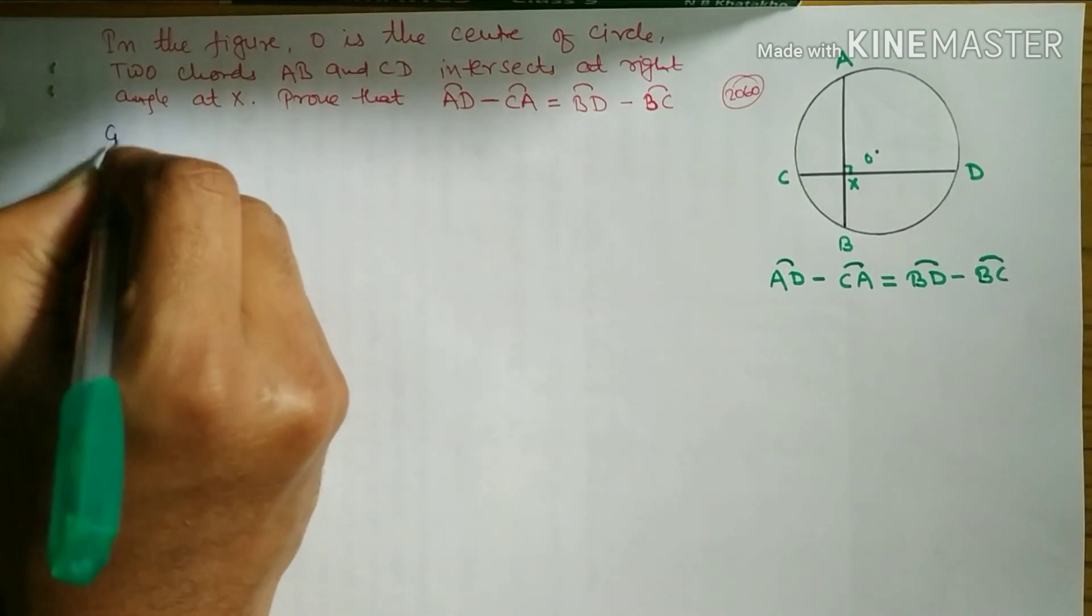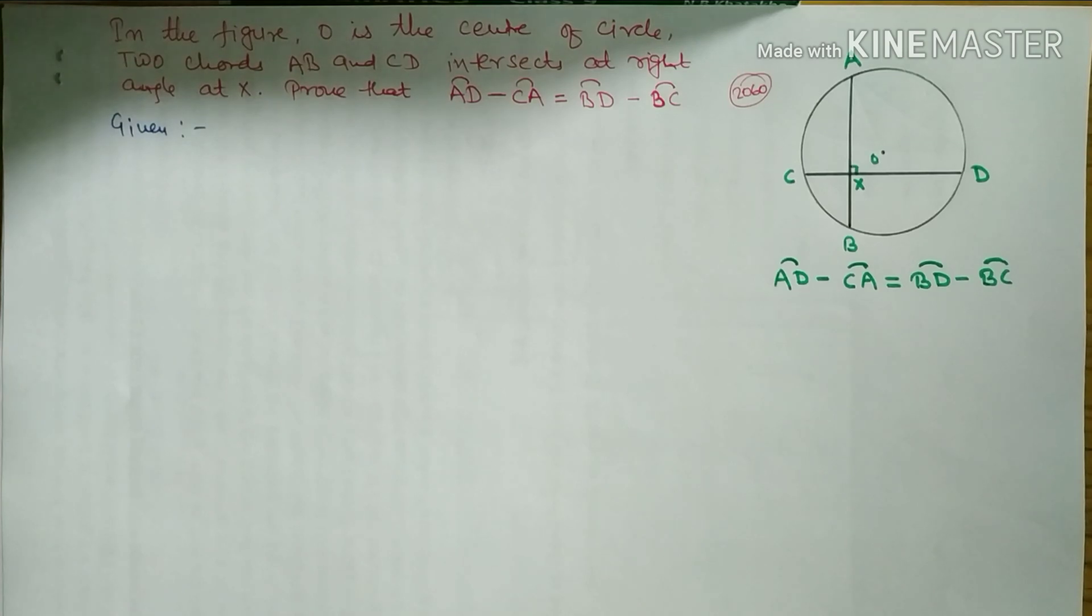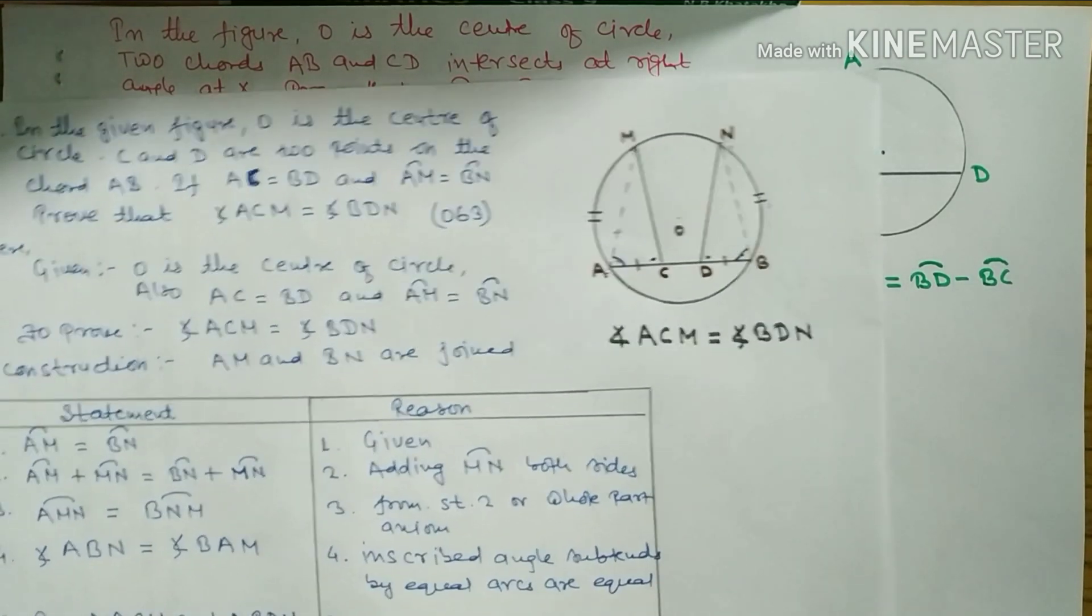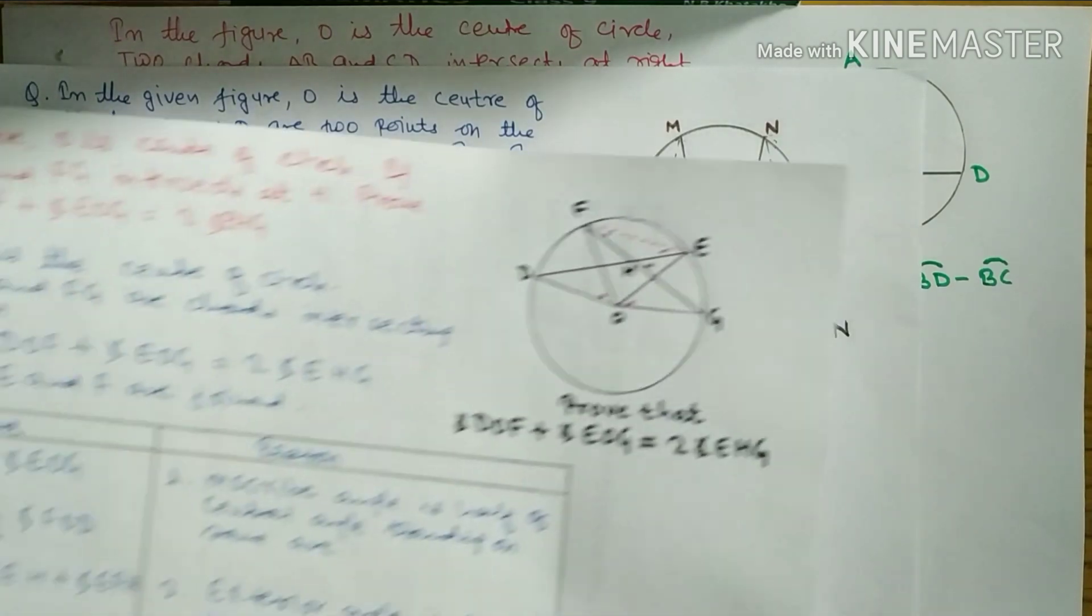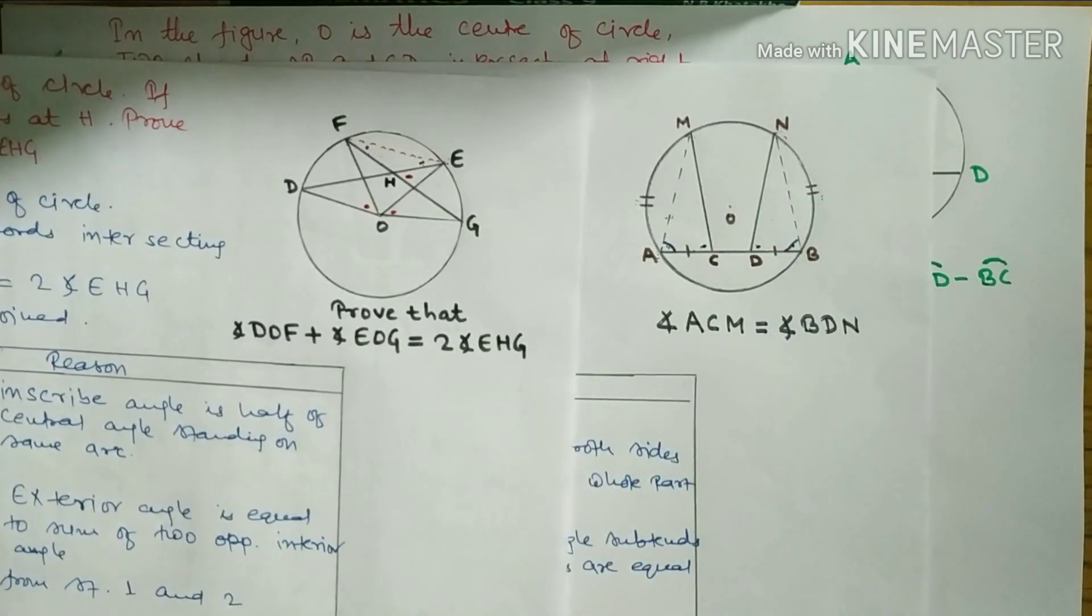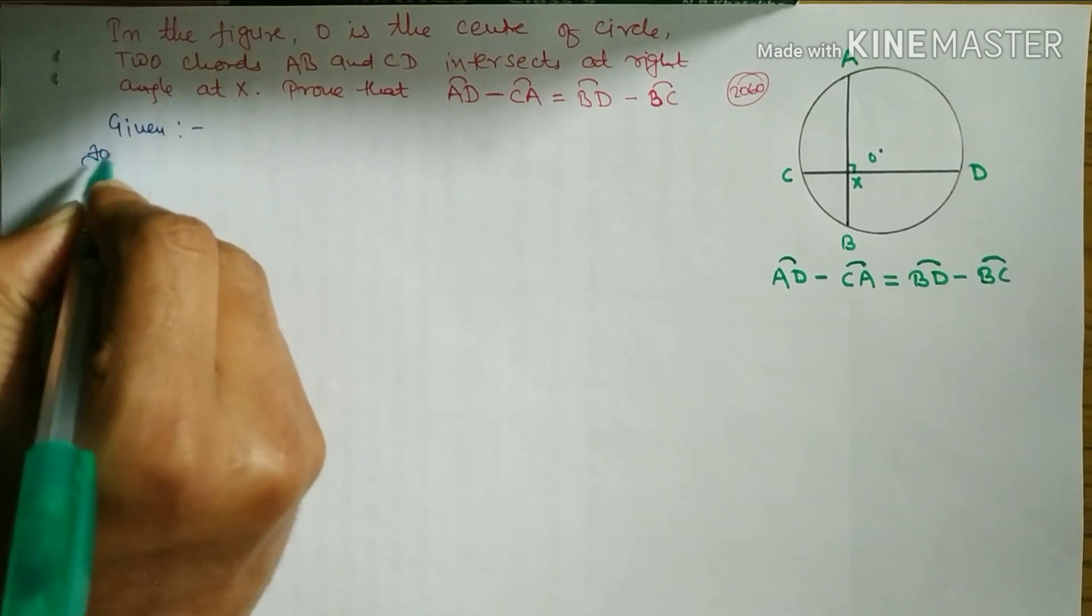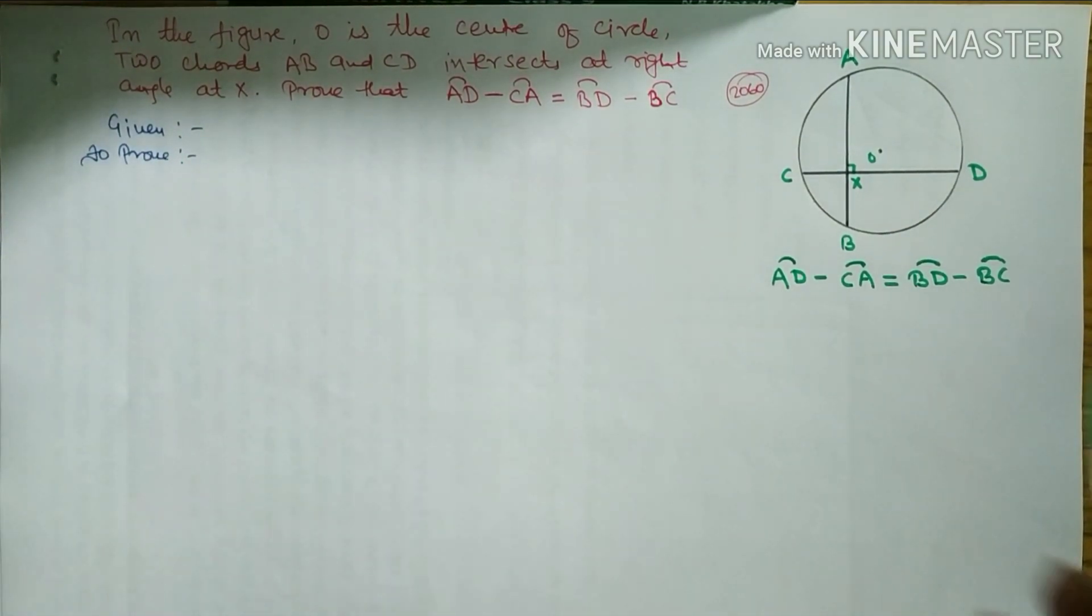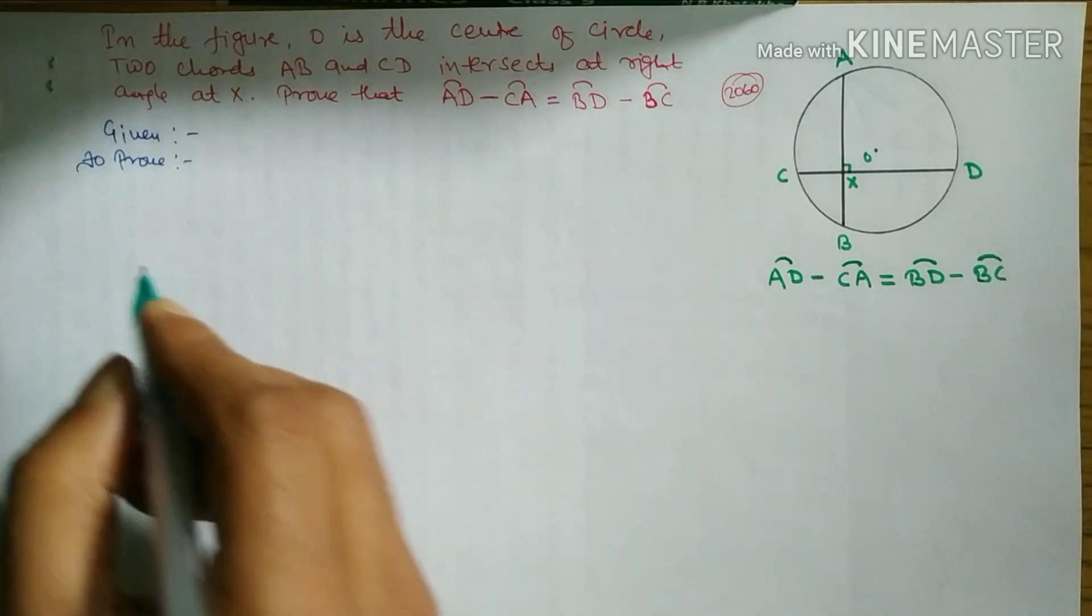Okay, first of all we have to write given. In given you can write: O is the center of the circle, two chords AB and CD intersecting at point X. To prove: in to prove you have to write arc AD minus AC is equal to arc BD minus BC. After this, construction.